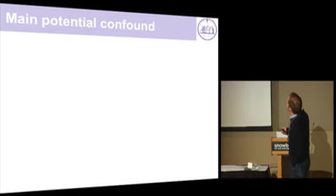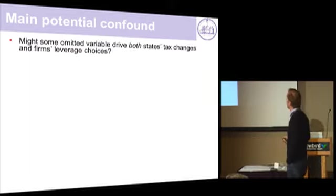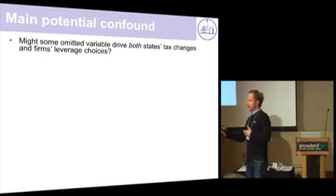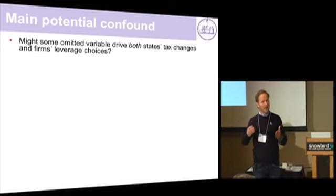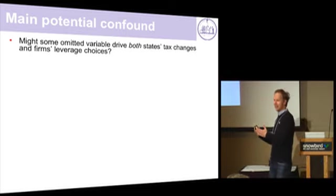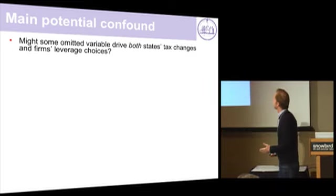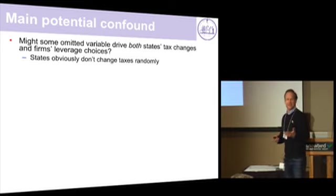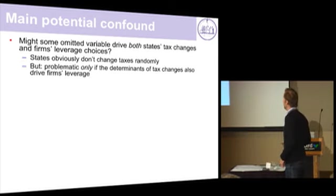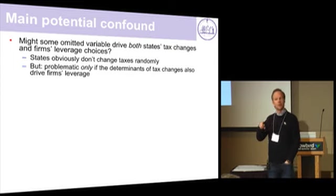This is the main potential confound — something driving both the tax changes of the state and the firm's debt decisions. That's the thing you want to rule out, because if there is such a factor, treated and controls are no longer randomly different. States don't change taxes because they just feel like it one day — there are reasons. The important thing is whether those reasons systematically relate to firms' capital structure choices.